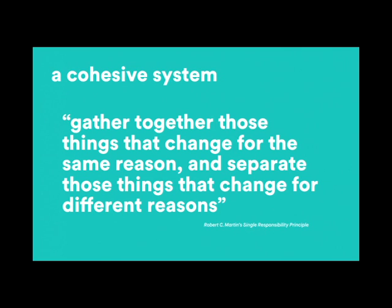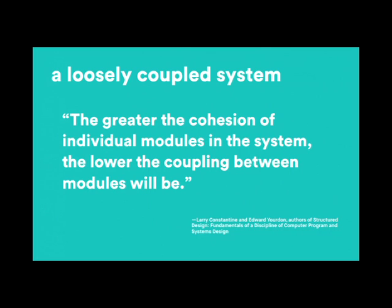It has to be a cohesive system. How many people know Uncle Bob? Look him up — he will change your life, one of the best architects in software engineering. What's a cohesive system? Gather together those things that change for the same reason, so when you apply a change you do it in one place, and separate those things that change for different reasons. If your system is cohesive it's also loosely coupled, because the individual things don't depend on each other. Cohesion and loose coupling — probably one of the biggest things.